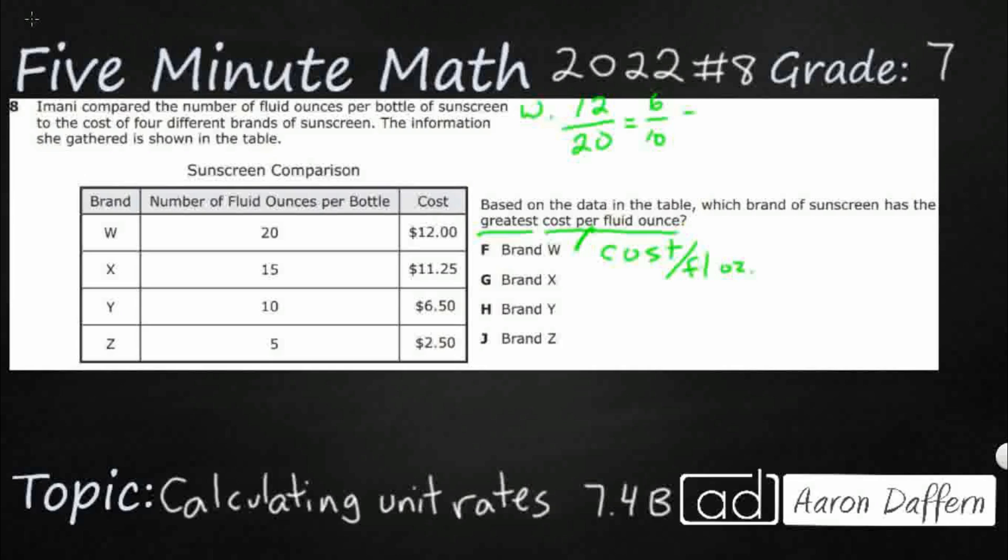Alright, so 6 tenths. We can do 0.6. What we are wanting to do is we are wanting to get these into decimal form. Sometimes we can do a fraction like that, but take a look at like X.